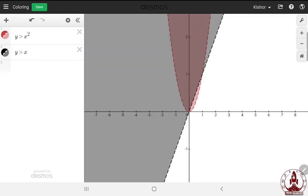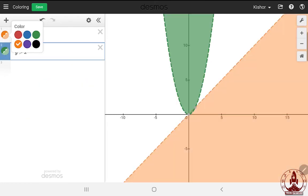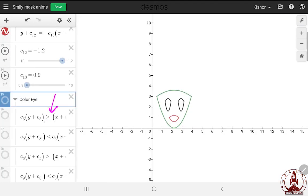With graphical calculator, we can also change the color of shadow, as per our wish, like this. Let's get back to our smiley mask and use the coloring rule.